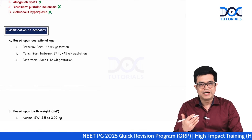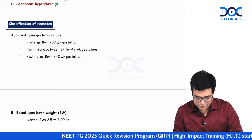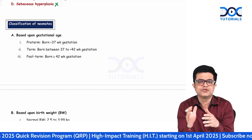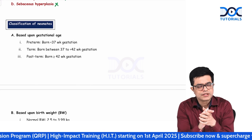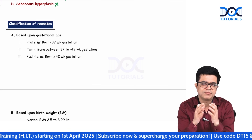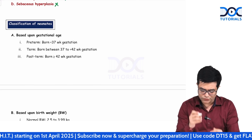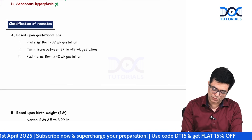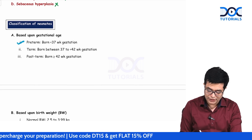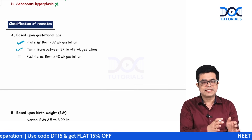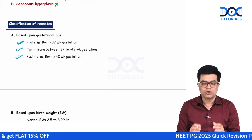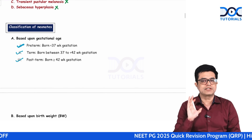Classification of newborns. There are multiple ways to classify the newborn. The first way is based upon gestational age. Based upon the gestational age when the baby is born, you can classify the baby as preterm, term, and postterm. Preterm baby will be born less than 37 weeks, term baby between 37 to less than 42 weeks, and postterm baby at or beyond 42 weeks.